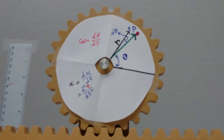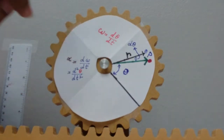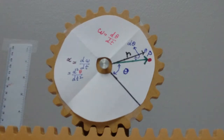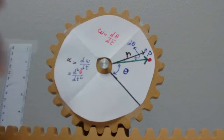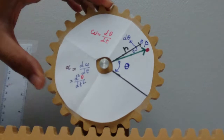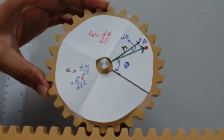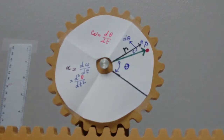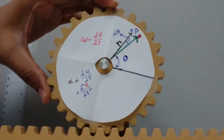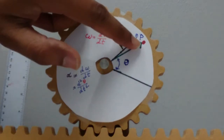Now let's talk about angular acceleration. Once you understand angular velocity, angular acceleration is straightforward. You take the derivative of angular velocity with respect to time, or equivalently the double derivative of theta with respect to time. It's important to understand that angular velocity and angular acceleration belong to the radial line r, not to the point. We will see how to connect the angular velocity and acceleration of r with the velocity of the point.